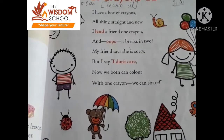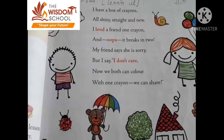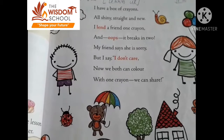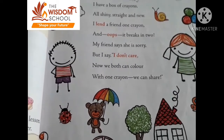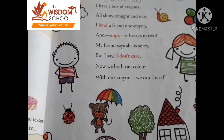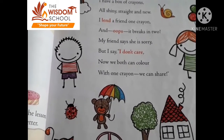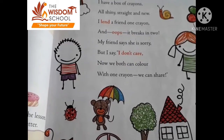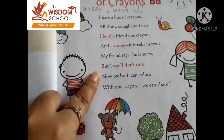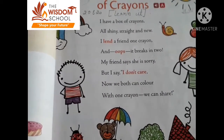My friend says she is sorry. Mere friend ne kaha — woh sorry feel kar rahi hai. But I say I don't care — lekin maine kya kaha — mujhe koi parwah nahi. Now we both can color with one crayon. Ab hum dono ek hi crayon ke saath color kar sakti hain. We can share.